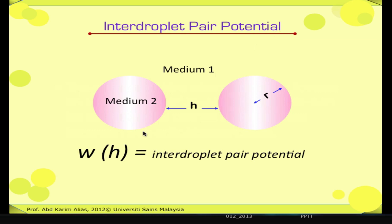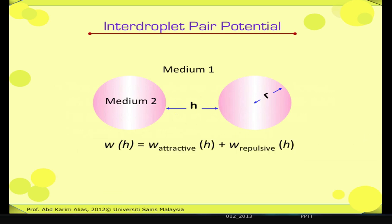The interactions between these two droplets can be described in terms of an inter-droplet pair potential, W(H). This is the energy required to bring two emulsion droplets from an infinite distance apart to a closer distance with a separation of H, as shown in the diagram. Consider a system of two emulsion droplets of radius R, separated from each other at a distance H. For simplicity, let's assume that only two types of interactions occur between the droplets — one attractive and one repulsive — so we write W(H) as a net sum of these two interactions.